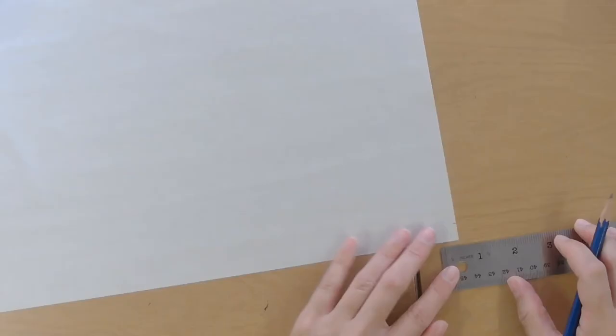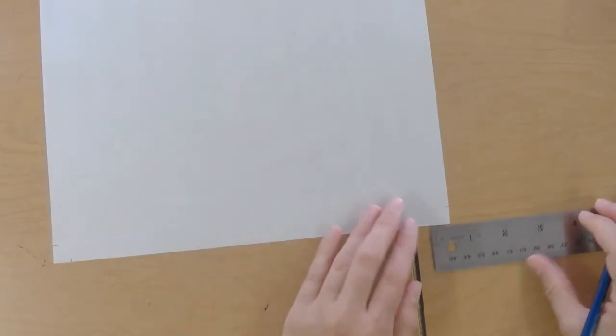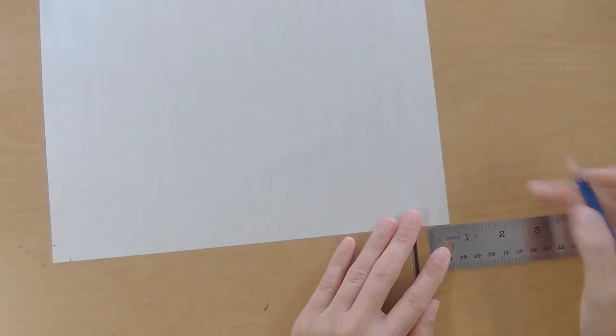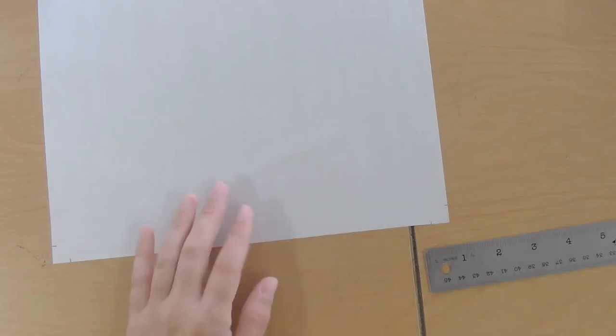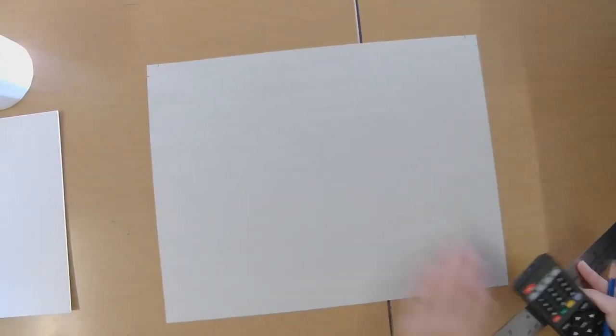Got a couple more. There we go. So now our whole paper has got eight tick marks that are one half inch away from the edge. Okay.